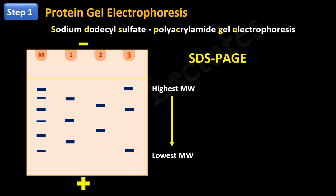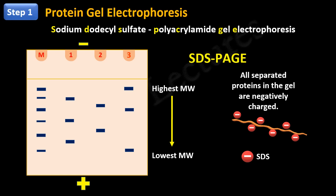Another important point is that all the separated proteins in the gel have uniform negative charge. This is because of sodium dodecyl sulfate, which coats the proteins.